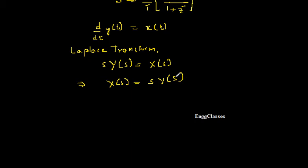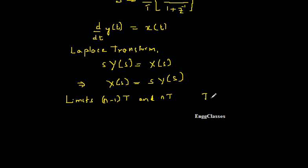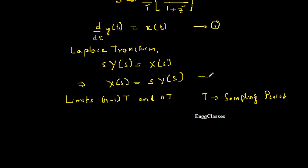Next, I want to find the output y(t) within the limits (n−1)T to n·T, where T is the sampling period. To find the output within these limits, I need to integrate both sides of equation 1 with respect to t. Let me call the original differential equation as equation 1, and X(s) = s·Y(s) as equation 2.